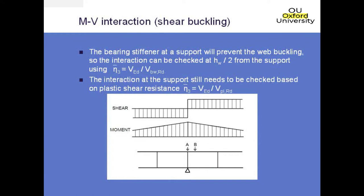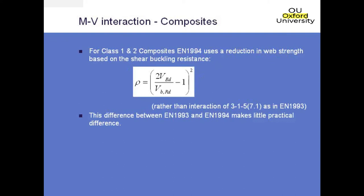For a composite section with a class 1 or 2 section, interaction is considered by reducing the web area even where there is shear buckling. This differs slightly from the approach for pure steel sections which uses the interaction formula instead. In practice though, even though the methodology looks slightly different, it doesn't really give any different answers — it gives you pretty much the same sort of result.